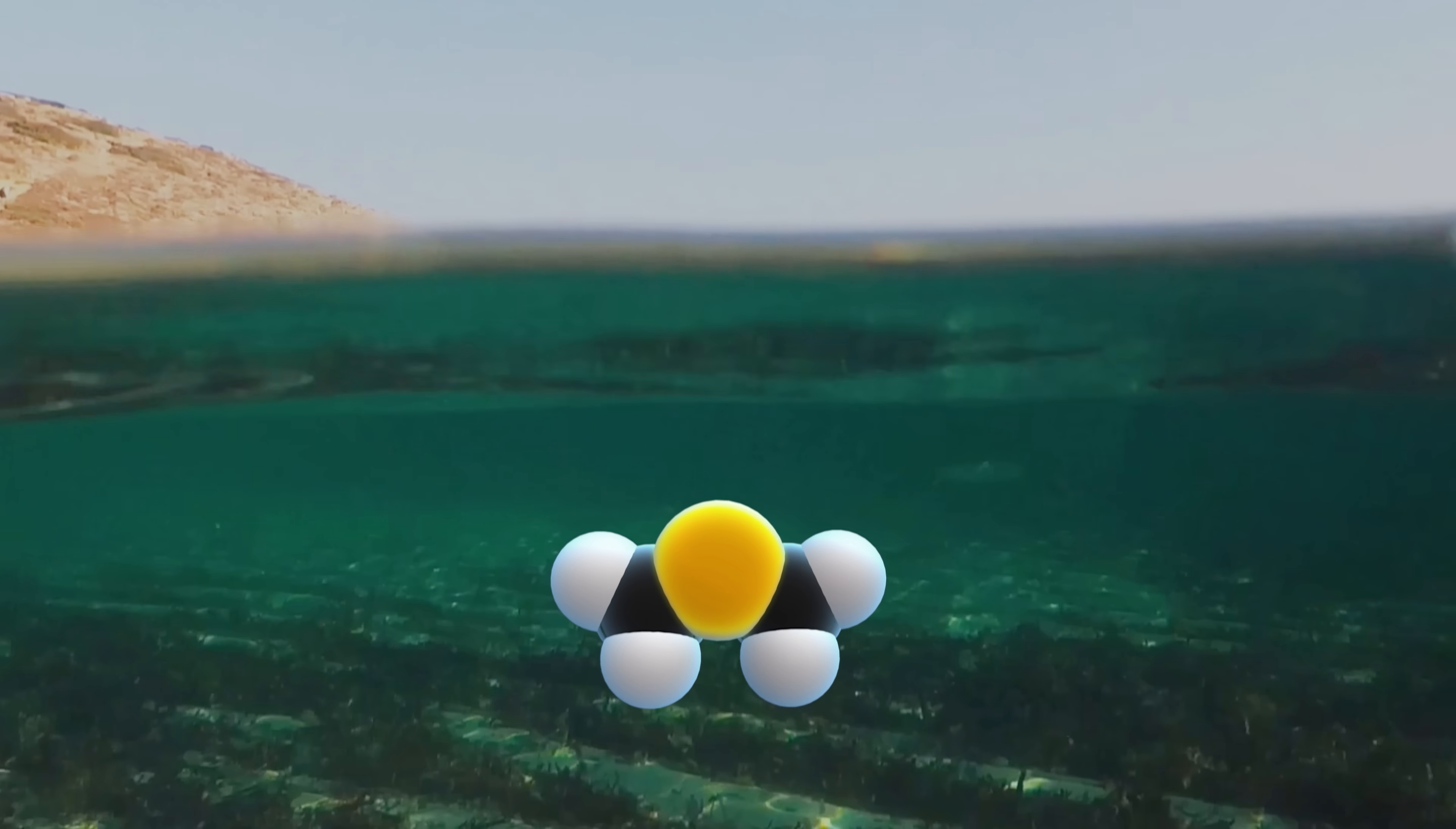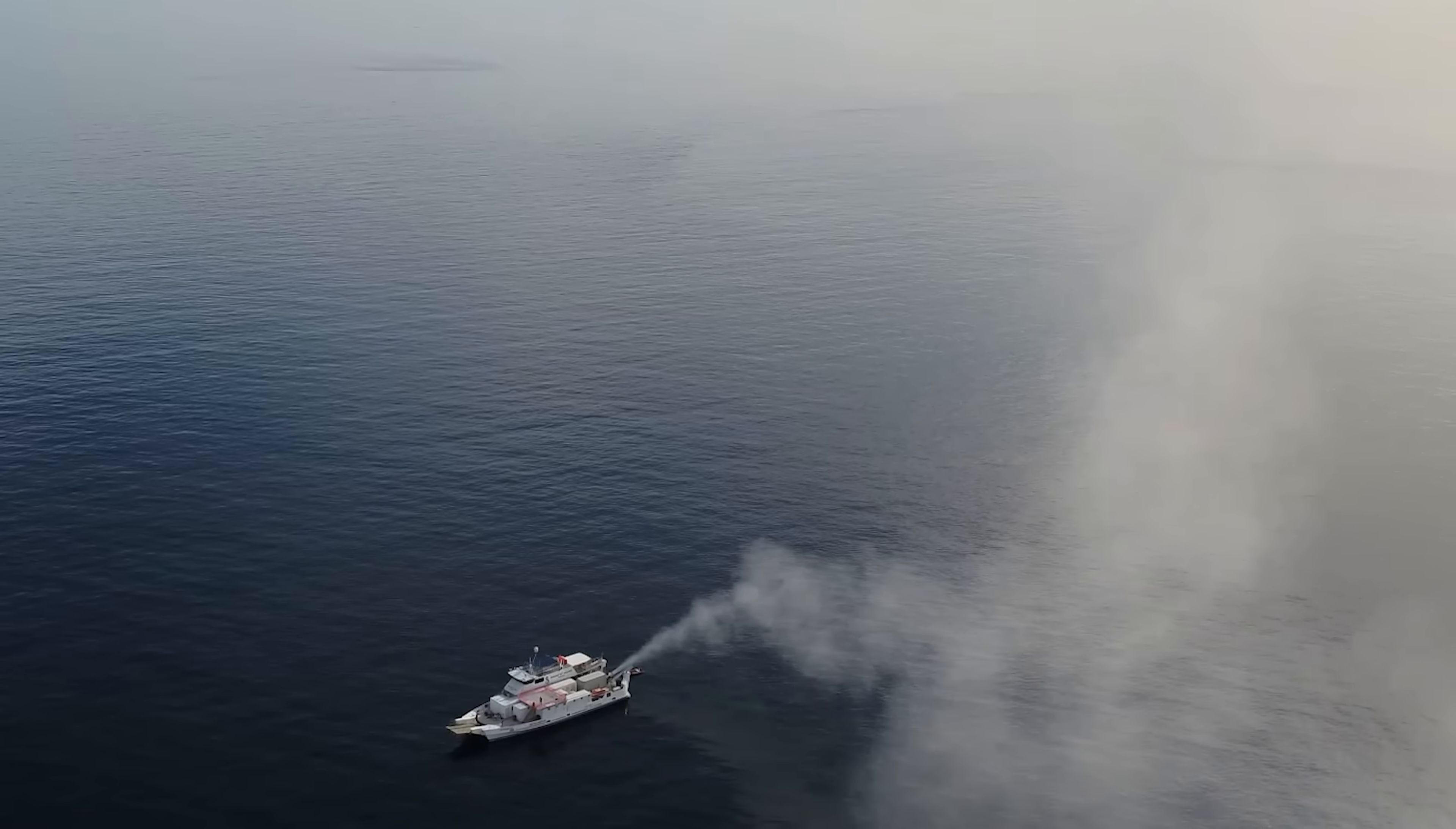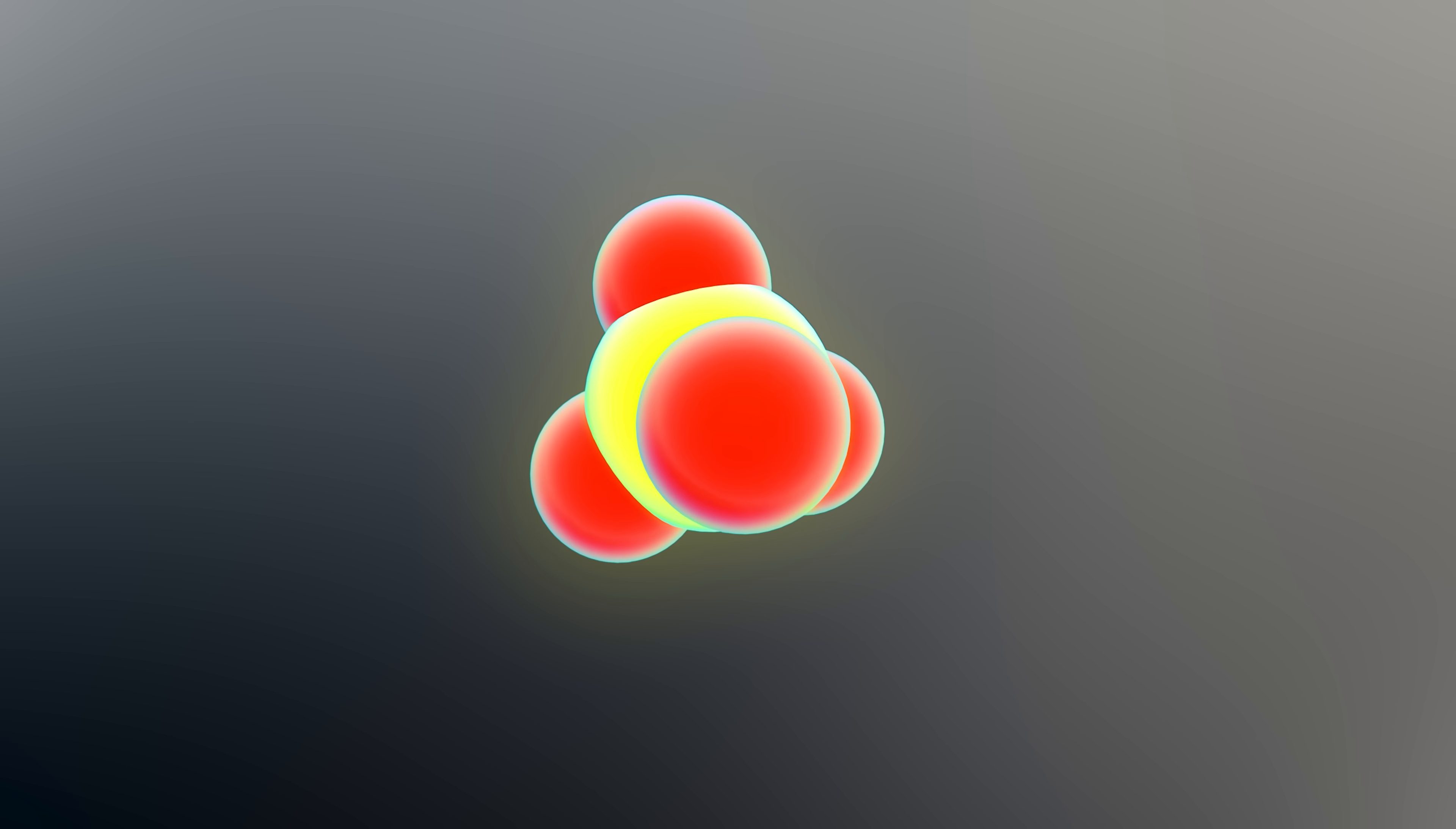Once DMS leaves the ocean and gets into the atmosphere, the methyl groups drop off, and it becomes a new molecule, sulfate. And for long time viewers of the channel, you might already know where this is going. The sulfate coming from DMS acts as cloud condensation nuclei, or little particles that allow clouds to form. Typically, these are things like dust or salty sea spray, but sulfate particles work just as well.